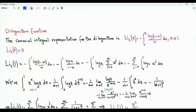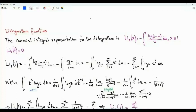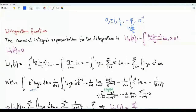Bismillah ar-Rahman ar-Rahim. This video is about some of the functional relations satisfied by the dilogarithm function, and it includes an evaluation of the value of the dilogarithm for eight arguments: zero, plus or minus one, one-half, minus phi (the golden ratio), one plus square root five over two, phi to the minus one, phi to the minus two, and minus phi to the minus one.